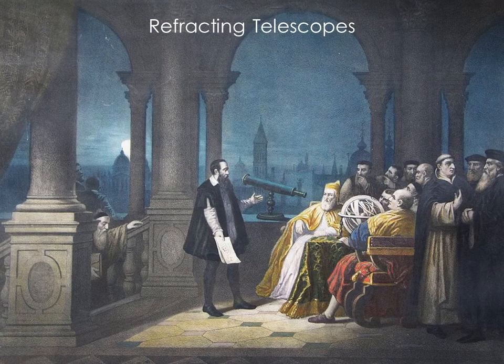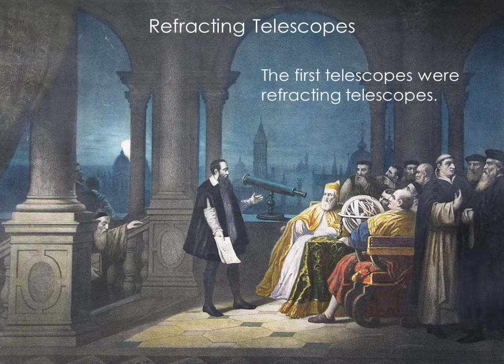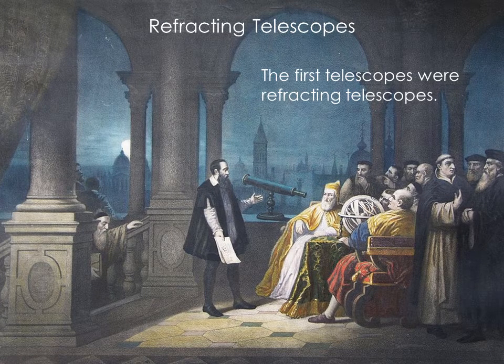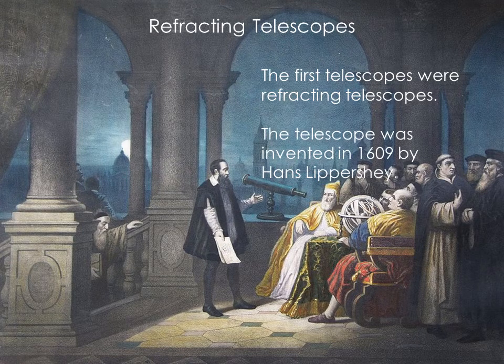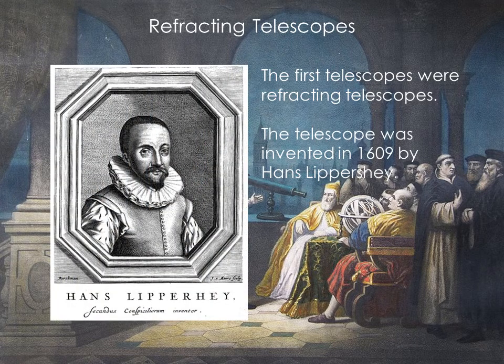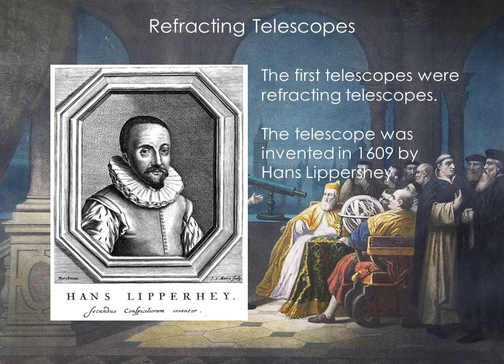The earliest known working telescopes were refracting telescopes. They appeared in 1608 and the design is credited to German-Dutch spectacle maker Hans Lippershey. Galileo didn't invent the telescope, but he did improve and optimize the design for astronomical observation.